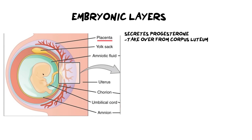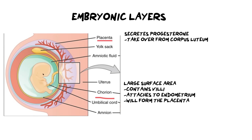In order to make the placenta we are going to use the chorion. The chorion is this yellow layer sitting on the outside — it's the outermost layer, with the amnion sitting on the inside. The chorion's first function is that it enables a large surface area, and the bigger the surface area, the more nutrients and wastes can be exchanged.